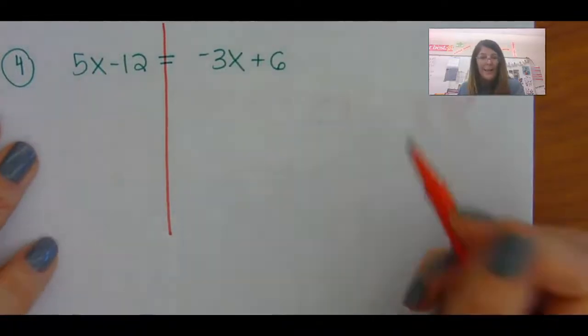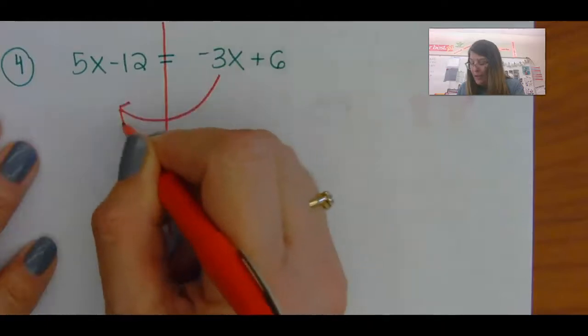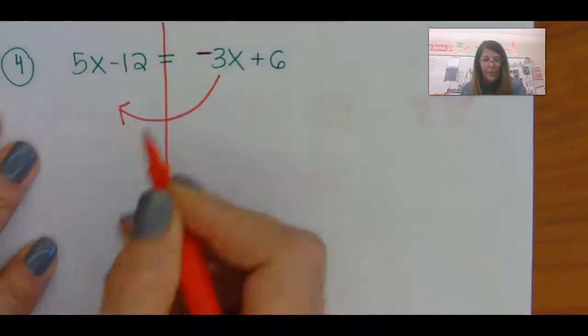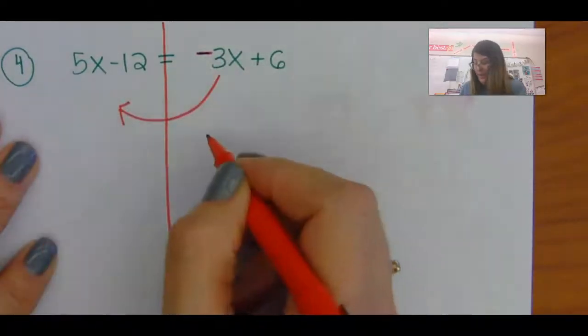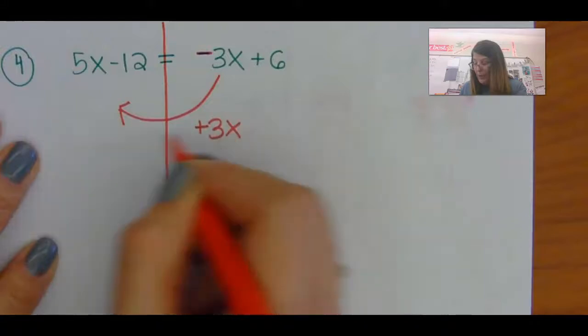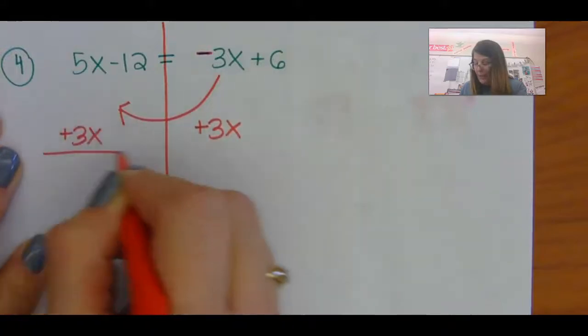So I need to get my x's all on one side. So to get this negative 3x over here with the 5x, I'm going to add 3x to both sides.